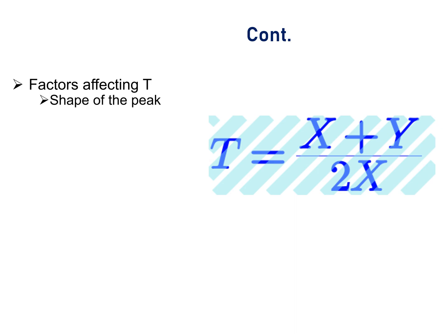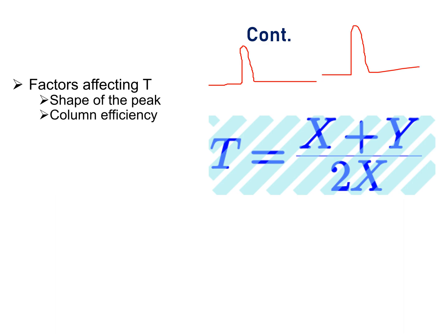For factors affecting tailing factor: shape of the molecule — for a symmetrical and sharp peak, tailing factor is always less than 1.5, but for a broad or unsymmetrical peak, tailing factor may be more than 1.5. Hence, tailing factor is inversely proportional to the shape of the peak. Regarding column efficiency: on increasing column efficiency, tailing factor decreases; on decreasing column efficiency, tailing factor increases. Hence, tailing factor is inversely proportional to column efficiency.